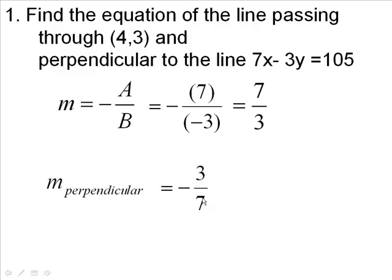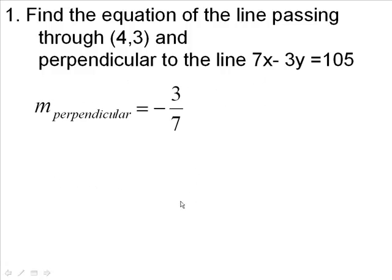So a line that has this perpendicular slope would have the coefficient for x as 3 and the coefficient of y as 7. The sign between them is going to be the opposite of this. So you're going to end up with 3x. The coefficient of x is 3, the coefficient of y is 7, and the sign is the opposite of this, so it's going to be plus.